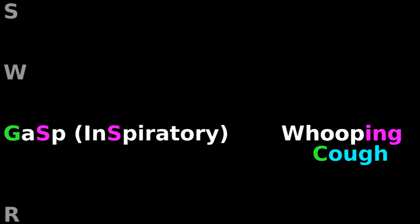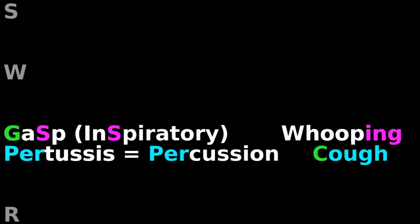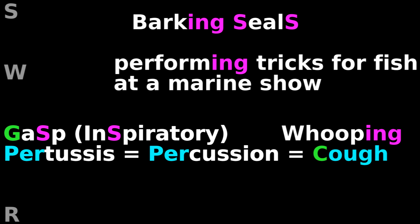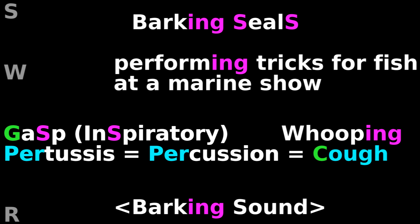Gasp — Inspiratory. You hear inspiratory gasps when someone has whooping cough or pertussis. Pertussis sounds like percussion, which reminds me of whooping cough. Whooping cough sounds like barking seals performing tricks for fish at a marine show.